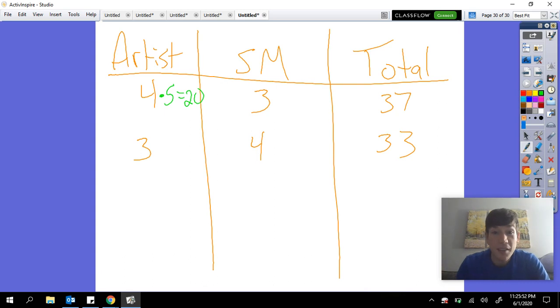3 times 3 is 9, but when I put together 20 and 9 I don't get 37, so I know that my guess and check does not work there.